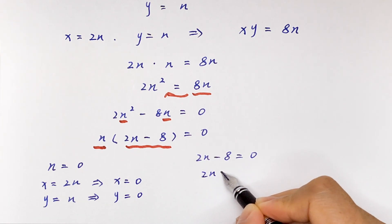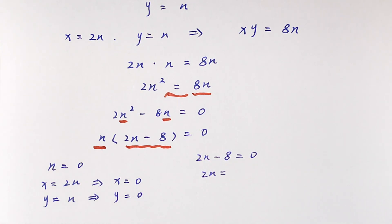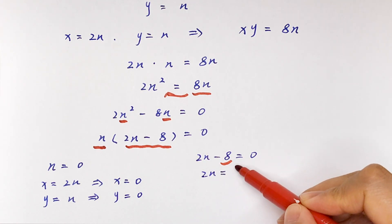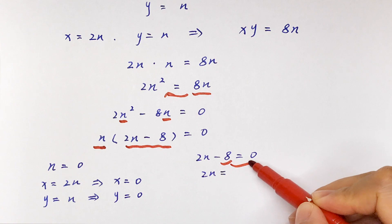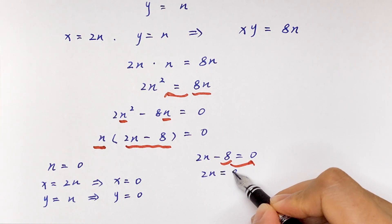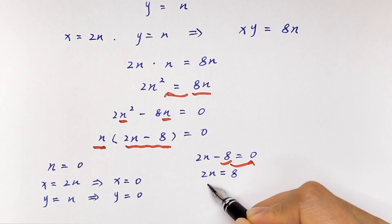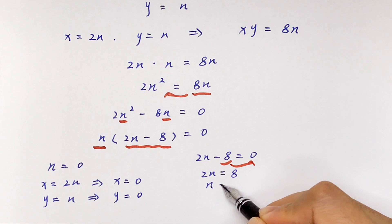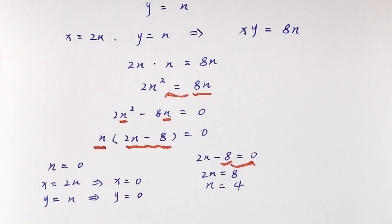For the second solution, 2n minus 8 is equal to 0. We take 8 to the right side, so 2n is equal to 8, then n is equal to 4.